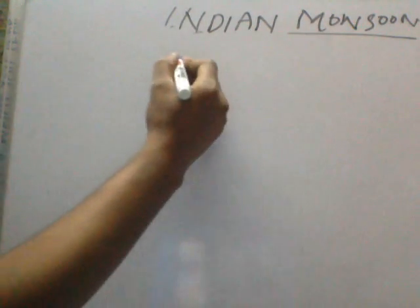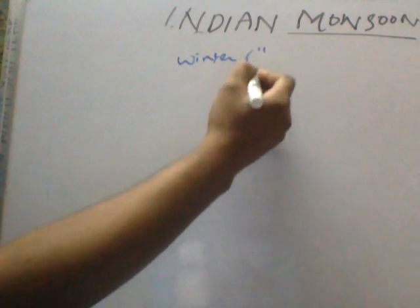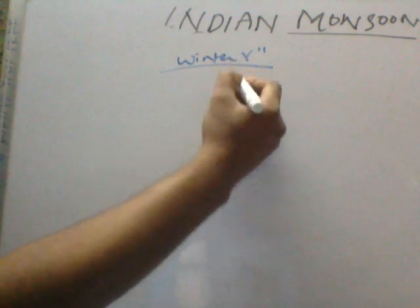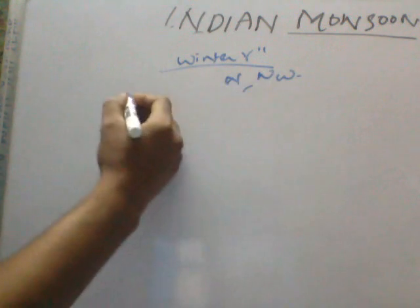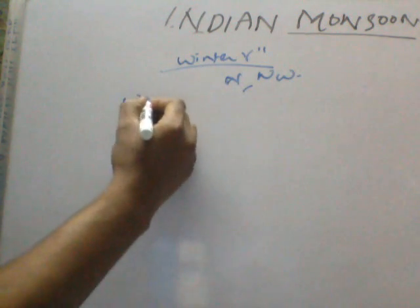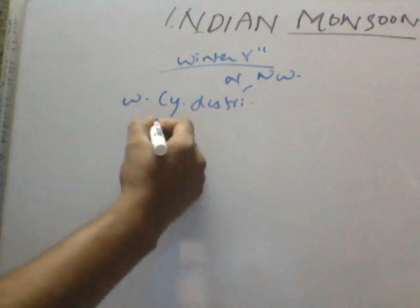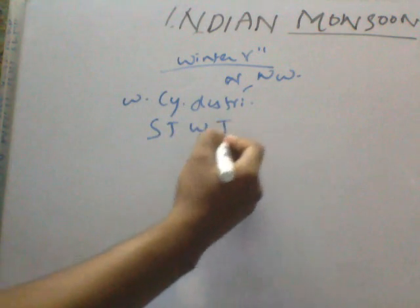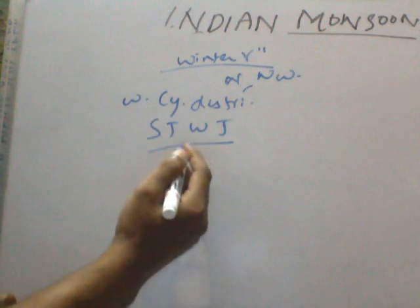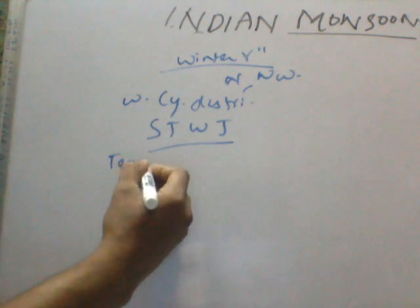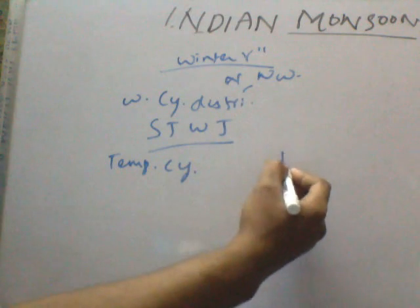The remaining winter rainfall in the north and northwest regions — especially in those areas — is caused by the subtropical westerly jet stream, which we discussed earlier. It brings seeds of temperate cyclones, and these result in rainfall in those regions.